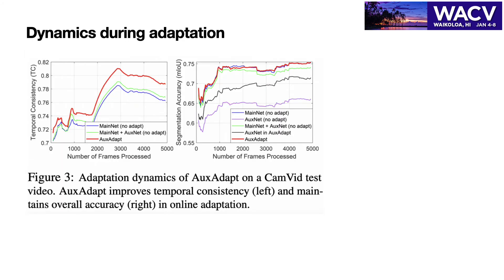Next, we look at some dynamics during adaptation. In the left figure, we show the temporal consistency along the number of frames processed at test time. In the right figure, we show per-frame segmentation accuracy. We see that AuxAdapt can drastically improve temporal consistency while keeping segmentation accuracy at the same level as the original segmentation network.